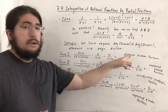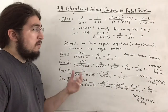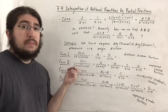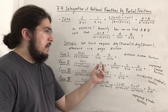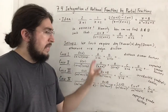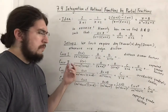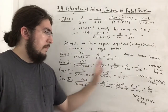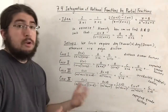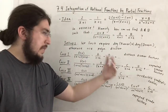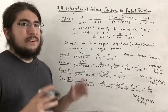Distinct means they're different, so in Case 1 you can't have x plus 1 appearing twice. For Case 2, we have repeated linear factors. If x plus a is repeated three times, you do the setup normally, but for the repeated factor you need A over that factor cubed, plus B over that factor squared, plus C over that factor to the first power — one term for each power from the highest down to the first.